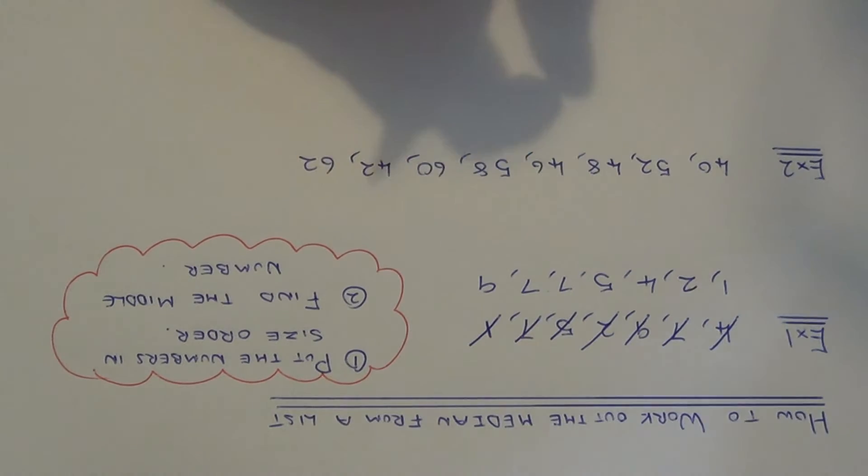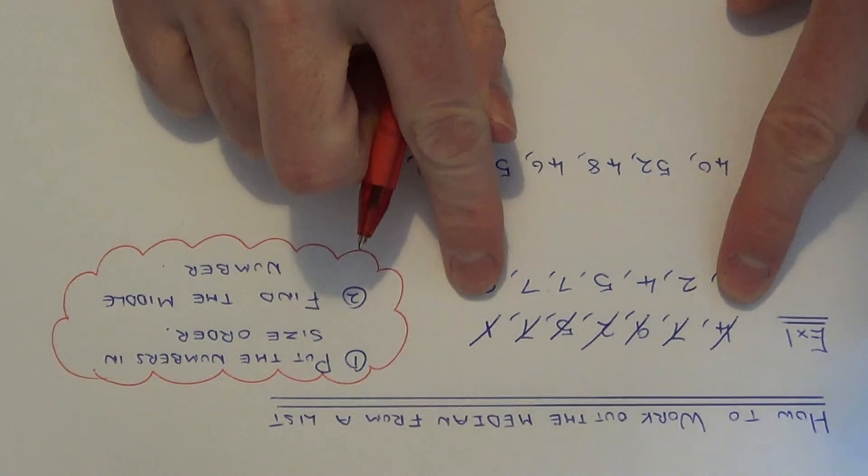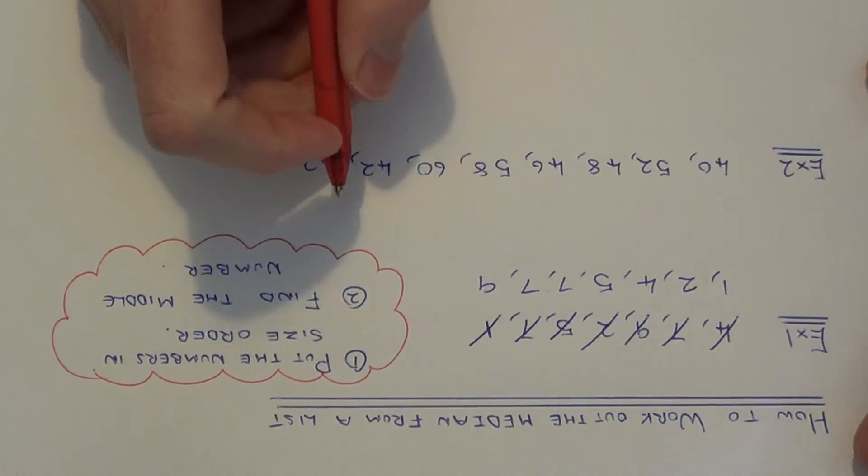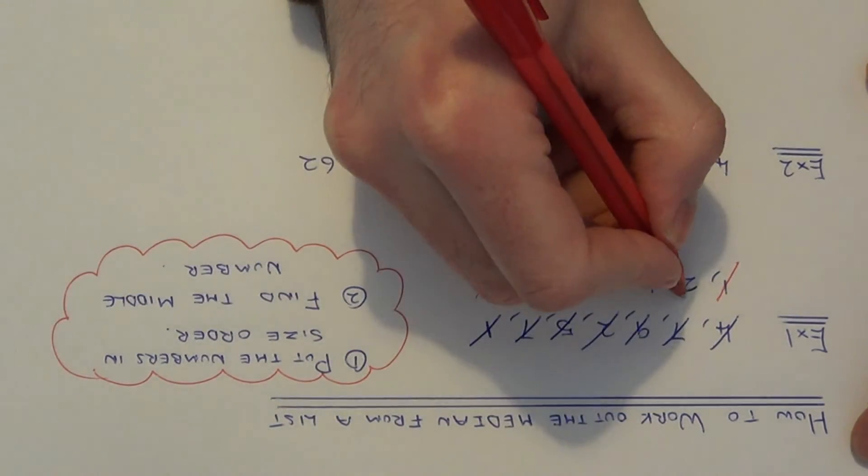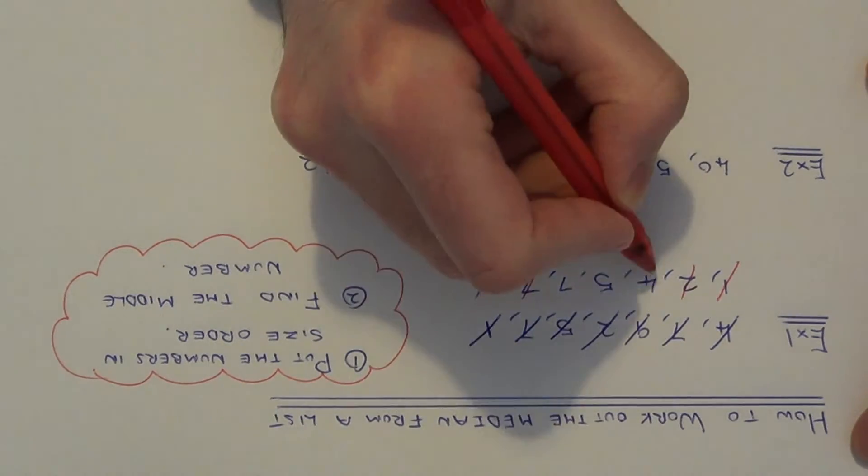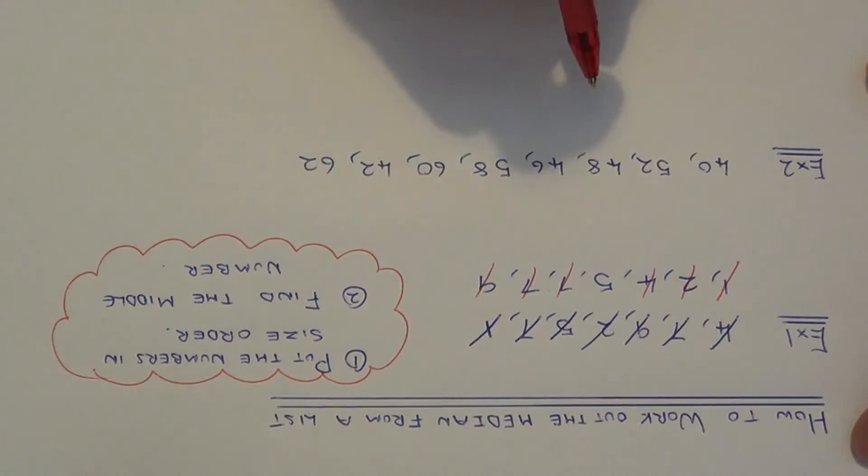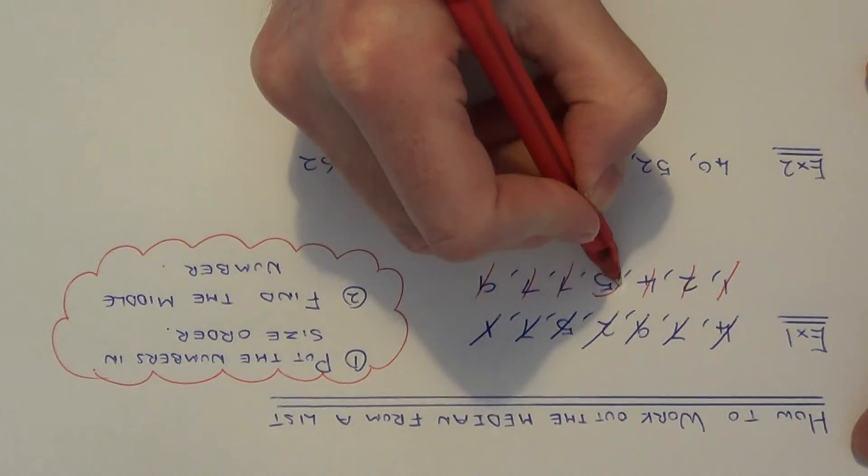So we just need to find the number in the middle. You can do this by crossing the numbers out either side. So let's cross out the first one and the last one. Then do the same again. Then do the same again. And you see you're left with the number five in the middle.